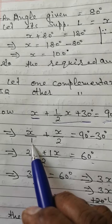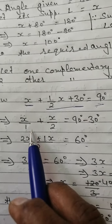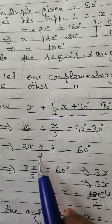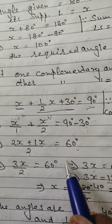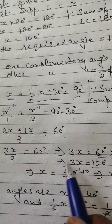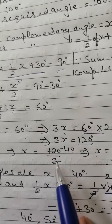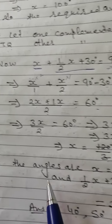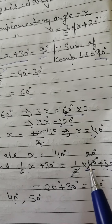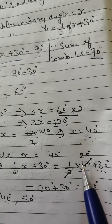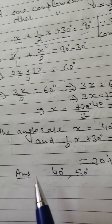Rearranging: x plus x/2 equals 90 minus 30 equals 60. Taking LCM of 1 and 2, which is 2: (2x plus x) divided by 2 equals 60. So 3x/2 equals 60, giving 3x equals 120, and x equals 40 degrees. The angles are: x equals 40 degrees, and (1/2)(40) plus 30 equals 20 plus 30 equals 50 degrees. These two complementary angles are 40 degrees and 50 degrees. Answer.